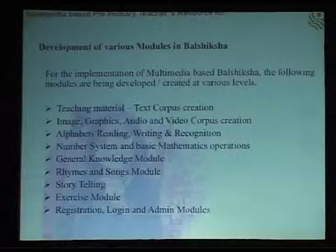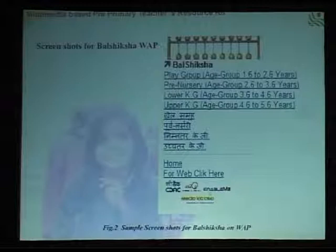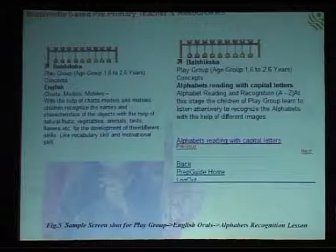These are the various modules available, which I have already covered. These are the basic screenshots. This is the WAP screenshot showing Playgroup, Pre-Nursery, Lower KG, and Upper KG. This application is also available in Hindi, and you can see the Hindi interface as well. This is the basic login and password screen. If you go into Playgroup, you will find different concepts like English, oral, maths, activities, concepts, general knowledge, rhymes, etc. Then alphabet reading with capital letters — like that you can browse through the whole content.